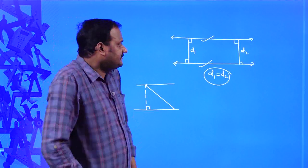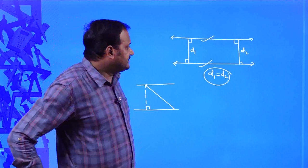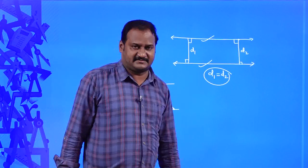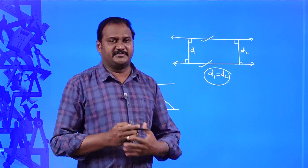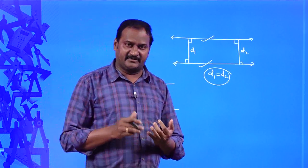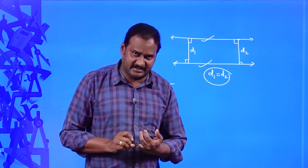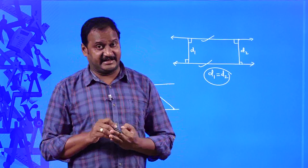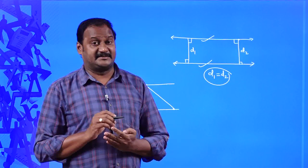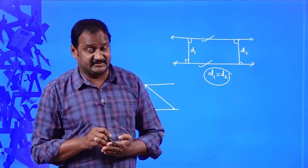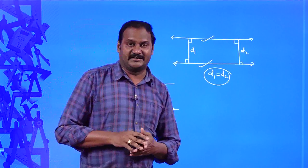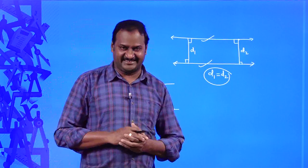With this concept we understand what is meant by a pair of parallel lines, vertically opposite angles, adjacent angles, supplementary angles, and complementary angles. Hope you understand. Thank you.